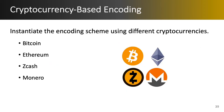Next we have the encoding scheme for the cryptocurrencies. For each cryptocurrency, we have a unique encoding scheme tailored for its characteristics. We have instantiated our encoding scheme on four different currencies: Bitcoin, the most popular cryptocurrency today; Ethereum, which focuses on complex smart contracts; and Monero and Zcash, which are privacy-preserving currencies.